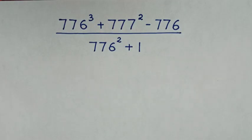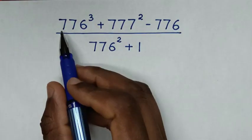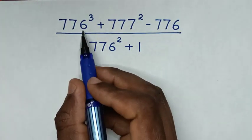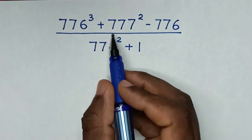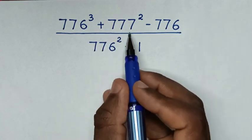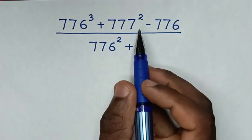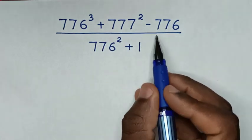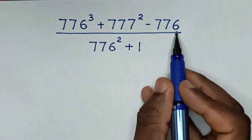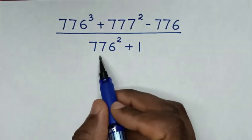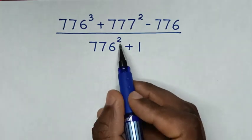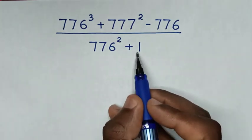Hello. How to solve 776 power 3 plus 777 square minus 776, over 776 square plus 1.